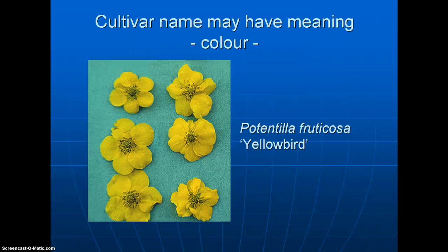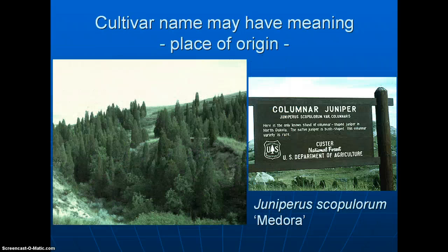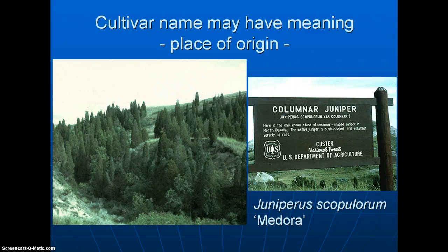Color is another example — Potentilla 'Yellow Bird' is not hard to imagine having yellow flowers, and indeed it does. Size is another clue: Viburnum opulus 'Nanum' — the name nanum refers to dwarf. Finally, names can indicate the origin of a plant. One Rocky Mountain juniper was selected from a population in North Dakota near a place called Medora, so it was given the cultivar name Medora. It was selected from a botanical variety called Columnaris — and you can see examples of very columnar specimens from that area.